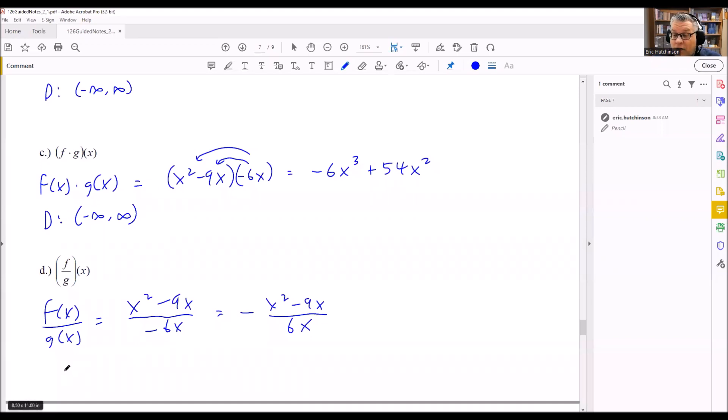So now we want to find the domain. Now this one's different than the other ones. Because now we have something on the bottom. So if we have a fraction like this, for the bottom, we know that 6x cannot be equal to 0. The bottom can't be equal to 0 because we can't divide by it. Which means if we divide both sides by 6, we end up getting x is not equal to 0. So 0 would cause division by 0 here, which we can't have.